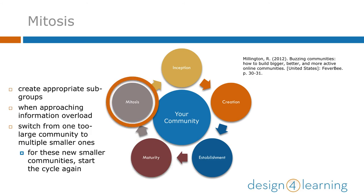Then some communities may reach the final stage: mitosis. This is the point when a community may be reaching information overload, and it makes sense to break into smaller groups to keep the size of the community and the amount of content manageable. The level where this point is reached will be different for each community. In an instructional setting, it can be beneficial to break a class down into smaller groups for closer interaction between community members. But any time you see members getting overloaded with the number of posts to read in a single forum, it may be time to facilitate mitosis.